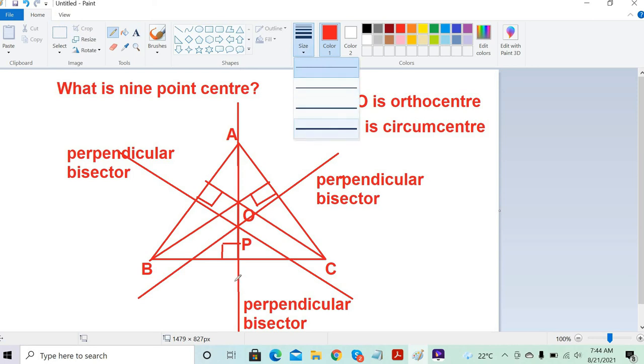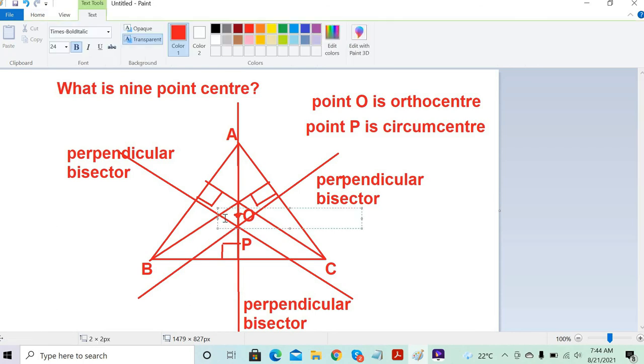It's very easy to understand once you know what the ortho center and circum center are. The nine-point center lies at the midpoint of the ortho center and the circum center. It is as simple as you have seen right now.